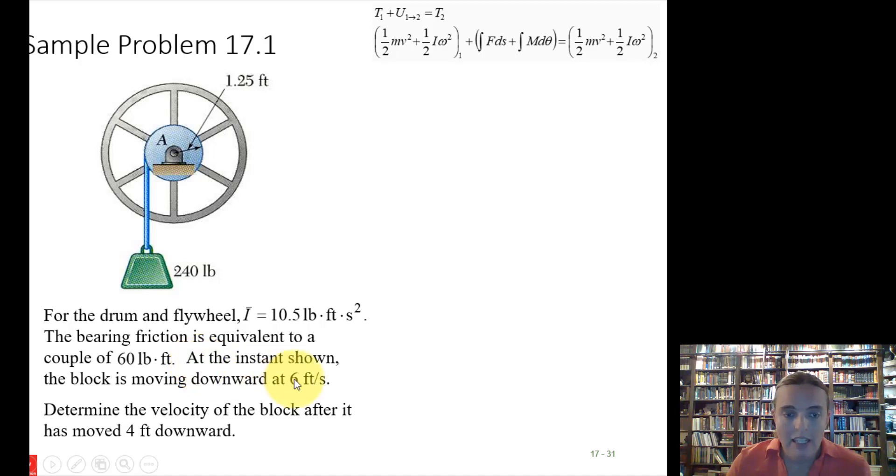They give us some starting conditions. At the instance shown, we're going at six feet per second. And we want to know the new velocity after it's moved four feet down. This is what really tells you we're doing an energy work problem. We have a starting velocity, which is a starting energy. Starting velocity, forces through a displacement four feet down, and then we want an ending velocity. If you read this problem statement, your mind should immediately come to an energy balance equation because we have starting velocity, we have forces acting through some distance. The block is going to be falling four feet downward through a distance. We have moments acting through this period. And then we have to figure out what the final velocity and energy of the system is.